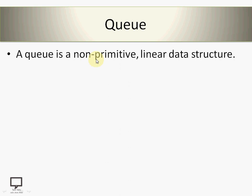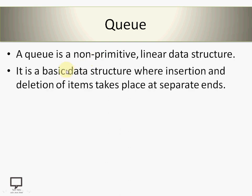Queue is a very basic data structure where insertion and deletion of items takes place at separate ends. You must have gone through the stack data structure — in a stack, both insertion and deletion operations take place at a single end, which is called the top of the stack.